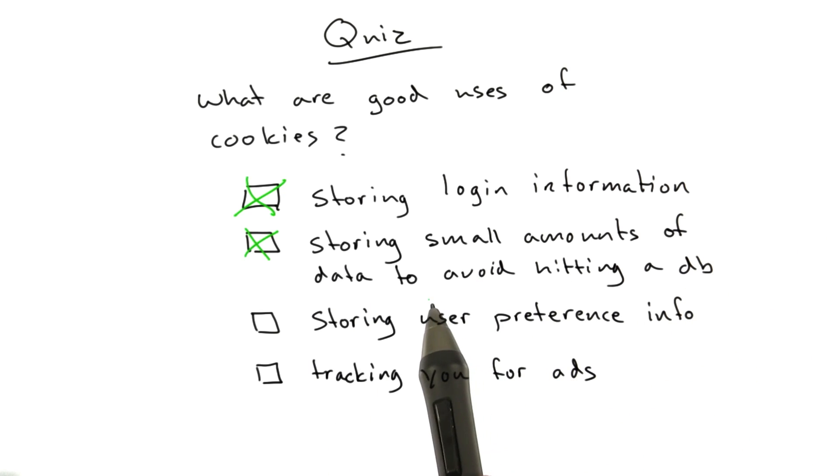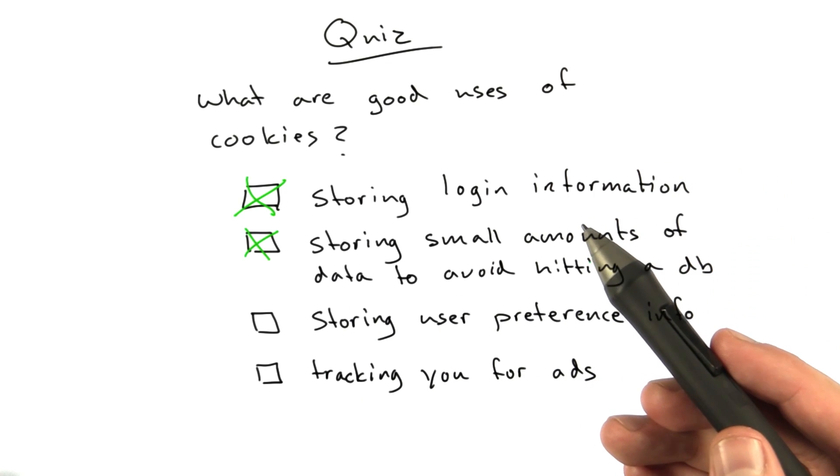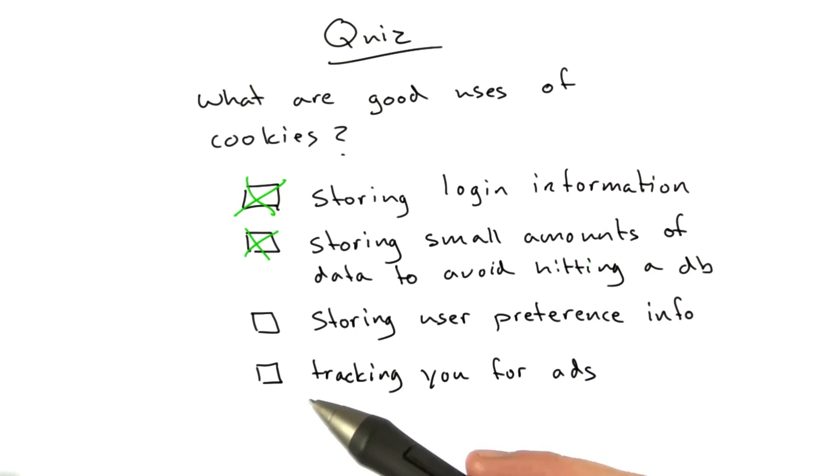Especially if it's anonymous data, data you don't mind losing. Because a user can, of course, clear all the cookies out of their browser, or a browser may not have cookies enabled at all.